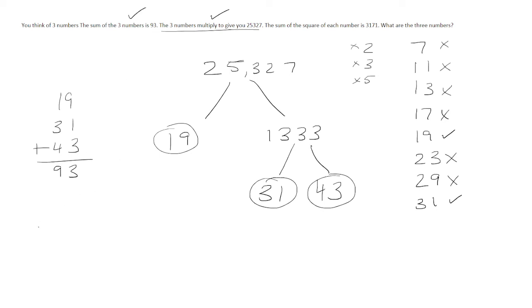And then the sum of the square of each number is 3,171. So let's square each number and add. 19 squared is 361. 31 squared is 961. And then 43 squared is 1,849. Add these up together, indeed you do get 3,171. So the three numbers are 19, 31, and 43.